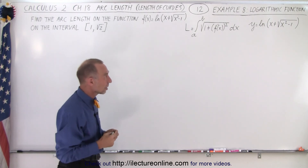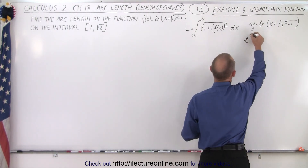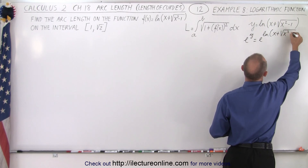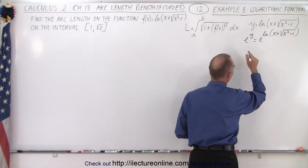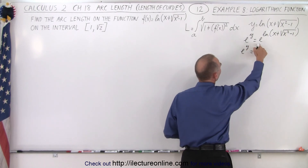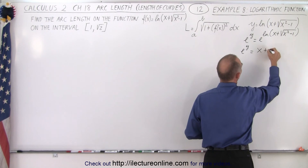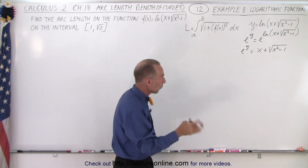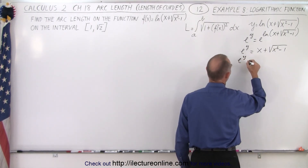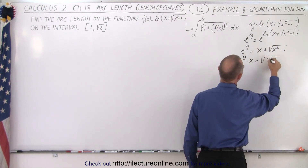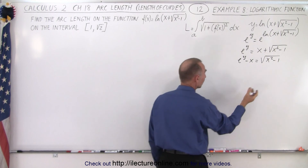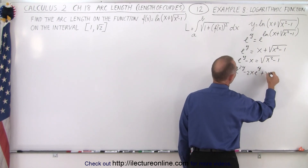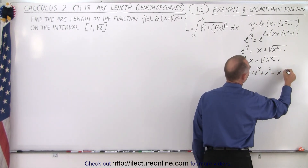To do that we need to take the antilog of both sides. So we can write this as e to the y equals e to the natural log of x plus the square root of x squared minus 1. On the right side this negates the natural log function and we end up with x plus the square root of x squared minus 1. The next step is to get rid of the radical, so we move the x to this side: e to the y minus x equals the square root of x squared minus 1. When we square both sides, on the left side we get e to the 2y minus 2x·eʸ plus x squared, equal to x squared minus 1.